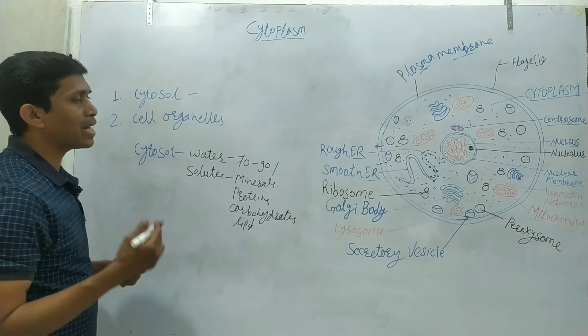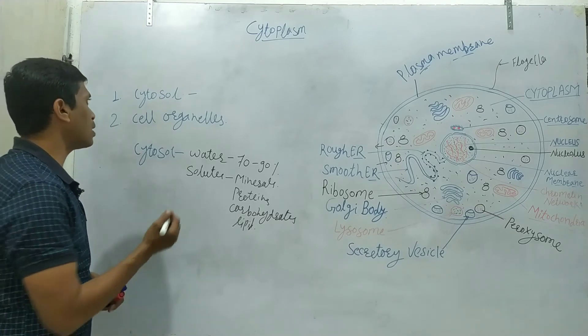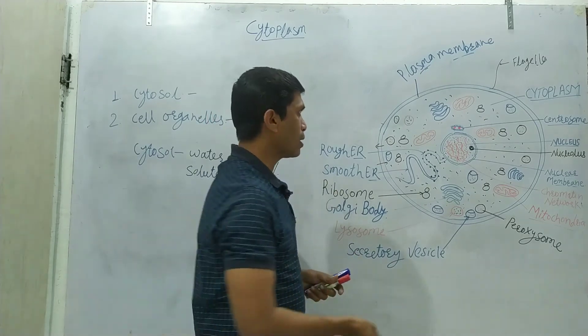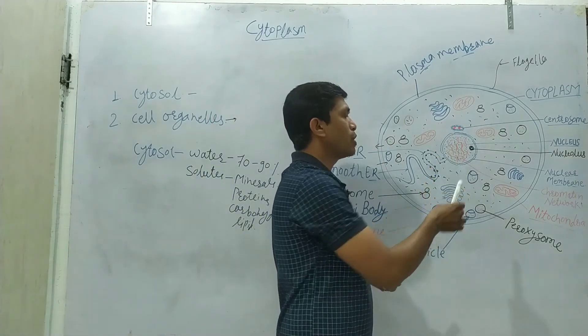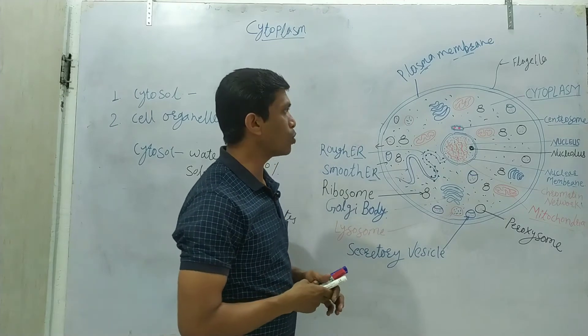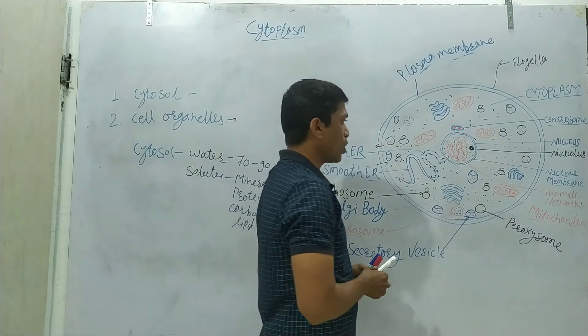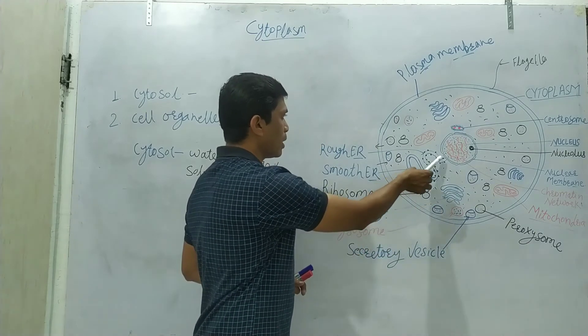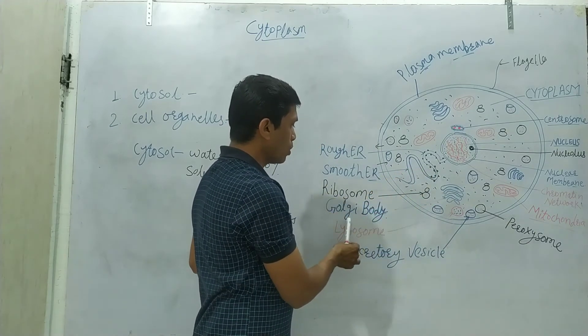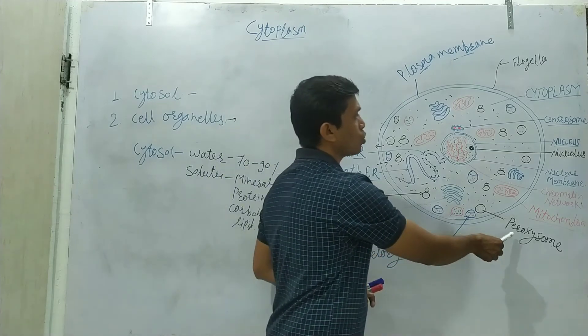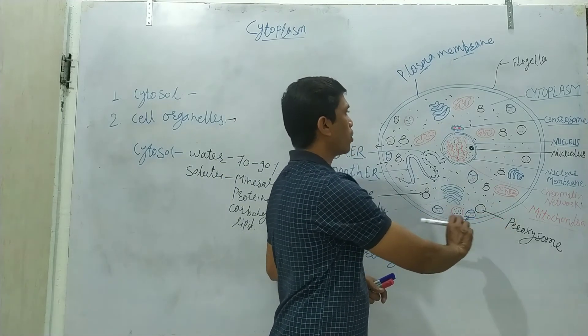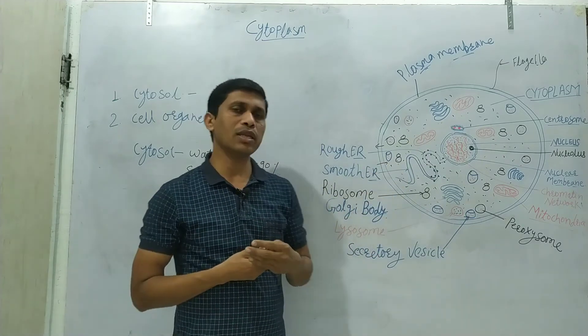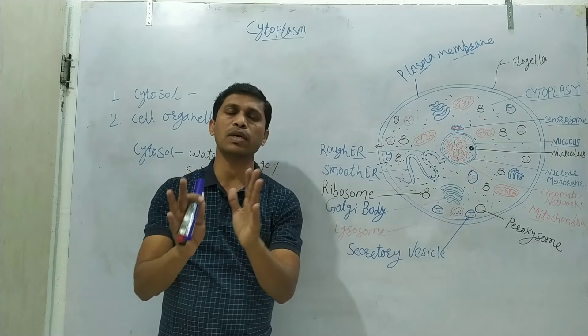This was the cytosol part of the cytoplasm. In this, the cell organelles like the basic cell organelles like this one is the centrosome, which is present just near to the nucleus, as well as mitochondria, Golgi body, endoplasmic reticulum, ribosome, lysosome, secretory vesicle, peroxisome. These are the basic cell organelles which are present in the cell, that is the part of the cytoplasm.